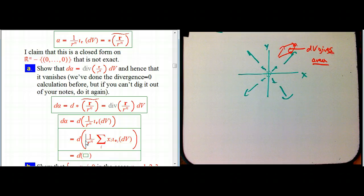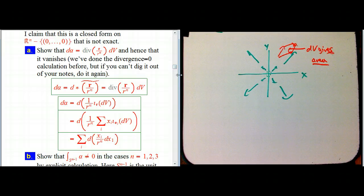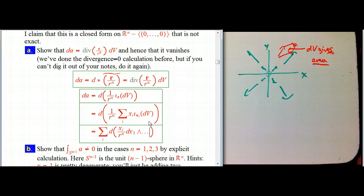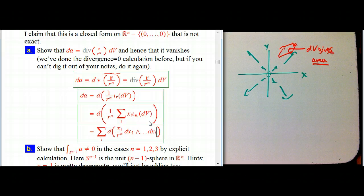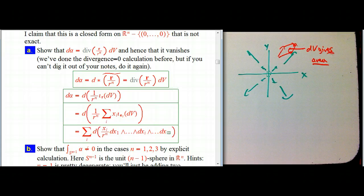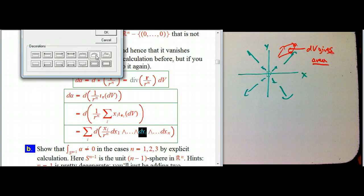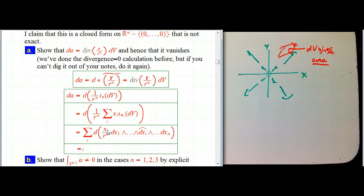So d of this: the scalar 1/R^n hangs out, and then i_{e_i}(DV) — recall DV = dx_1 ∧ ... ∧ dx_N — and this just takes out the i-th factor, giving dx_1 ∧ ... ∧ dx̂_i ∧ ... ∧ dx_N, where the hat indicates that dx_i is omitted. There's also a sign of (−1)^(i−1) because dx_i has to switch past i−1 things to get into the right place.